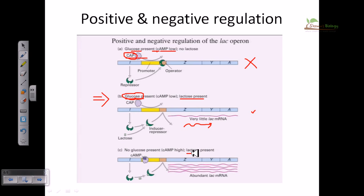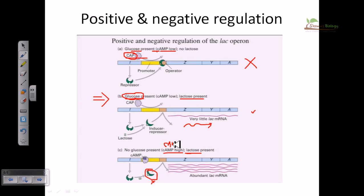In the third case, when glucose is absent but lactose is present, the cell needs to produce energy from lactose. Lactose binds the repressor, displacing it from the operator site. Because of low or absent glucose, cyclic AMP levels are high, and cyclic AMP binds the CAP protein. The CAP-cAMP complex then sits onto the promoter region, helping RNA polymerase bind and read all the sequences for transcription.